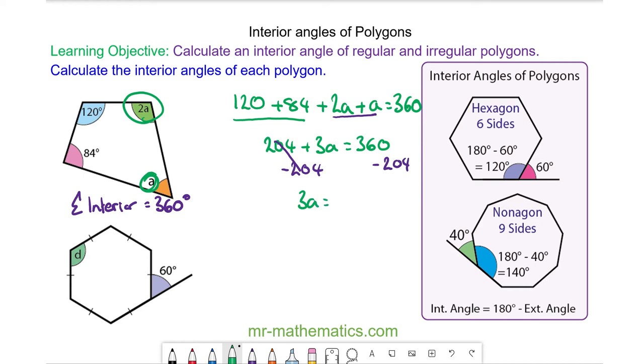So 3A will equal 156 degrees. We can divide both sides by 3 and A is equal to 52 degrees.